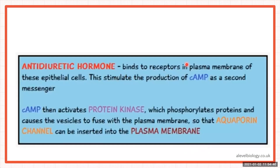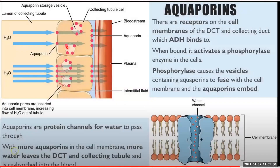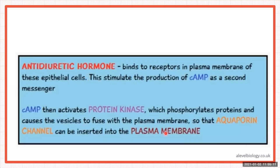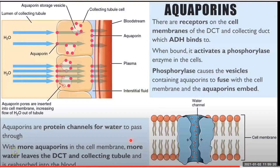Antidiuretic hormone binds to receptors in the plasma membrane of the epithelial cells of the distal convoluted tubule and collecting duct. This stimulates production of cyclic AMP, which acts as a second messenger. Cyclic AMP activates the enzyme protein kinase, which phosphorylates proteins and causes vesicles containing aquaporins to fuse with the plasma membrane, inserting aquaporin channels into the apical membrane.